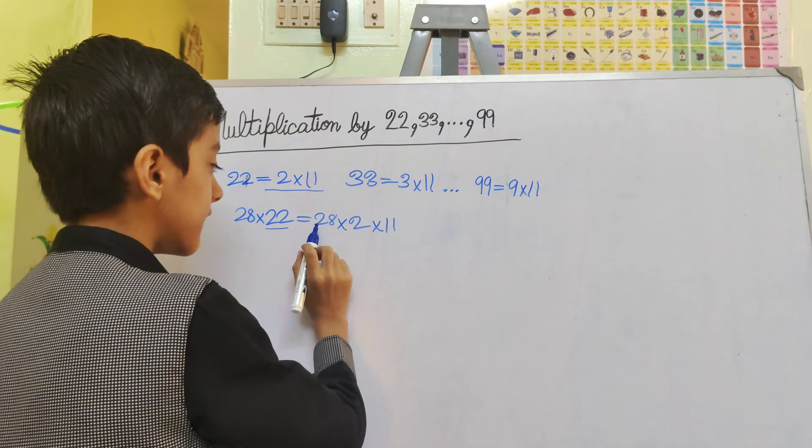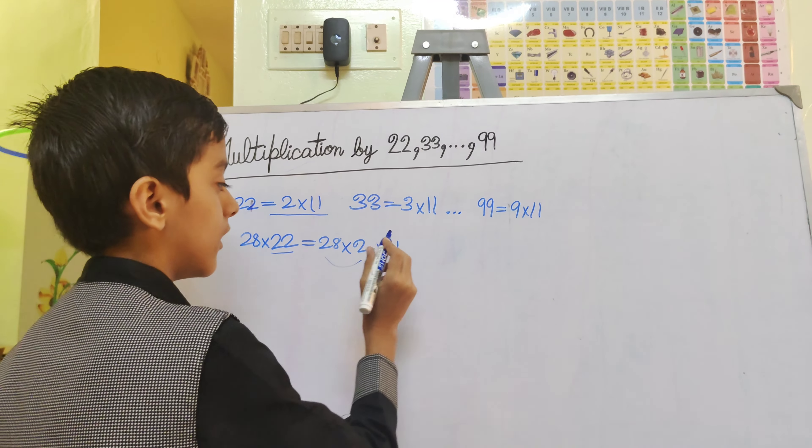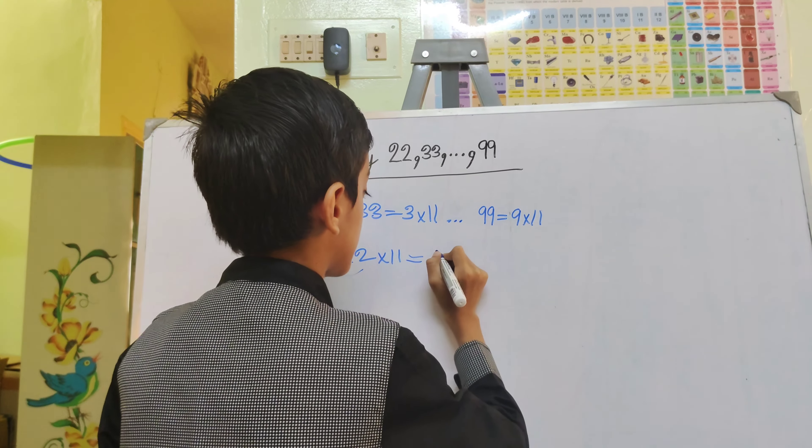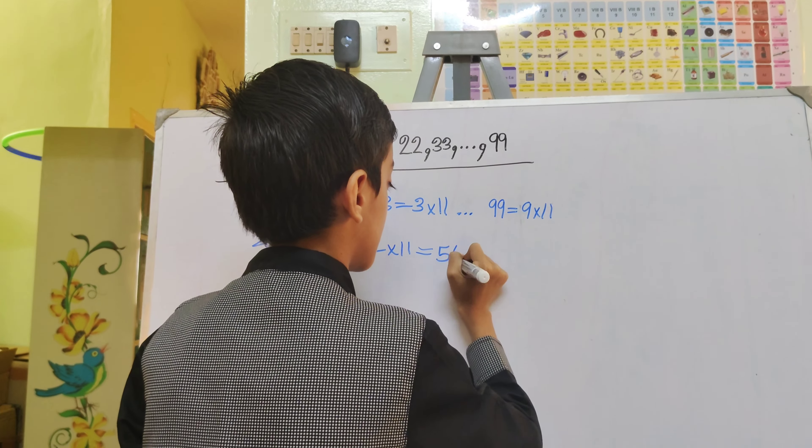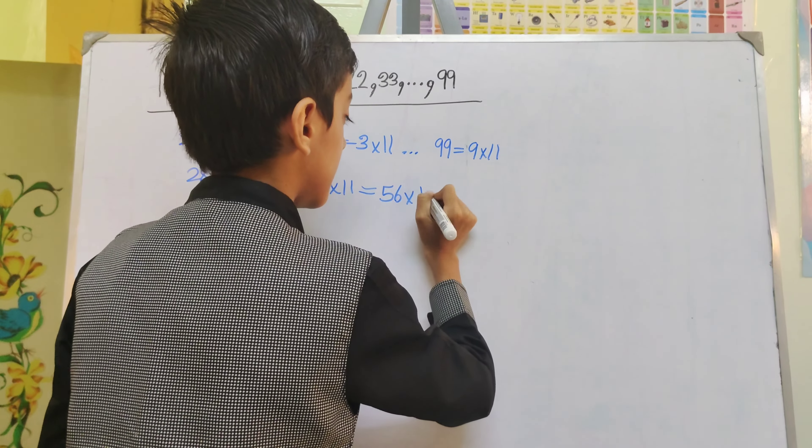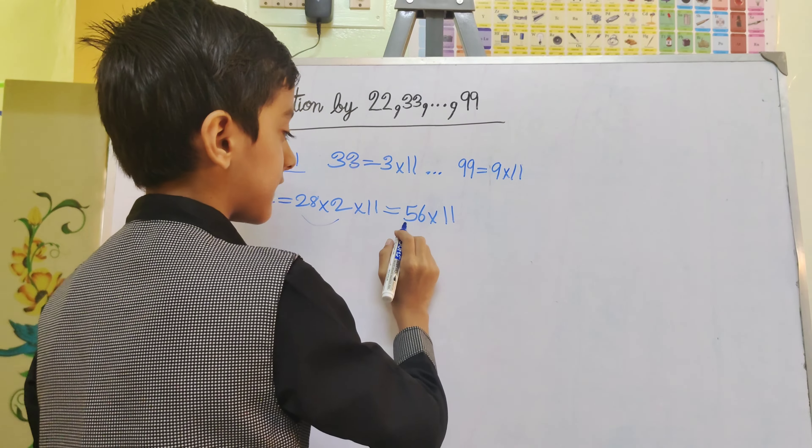First, we will multiply 28 and 2. So, 28 multiply 2 is 56. Then, we will multiply 56 and 11.